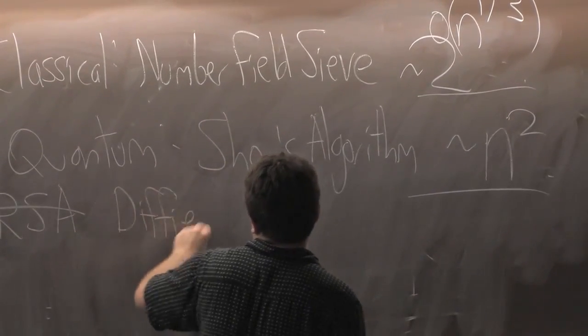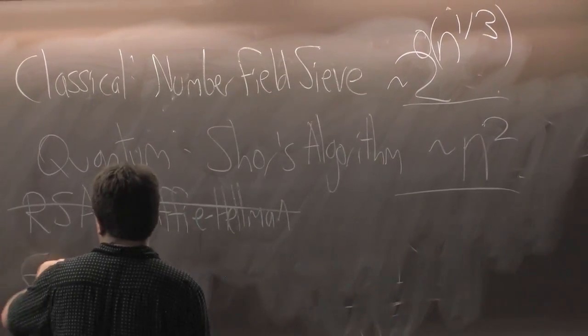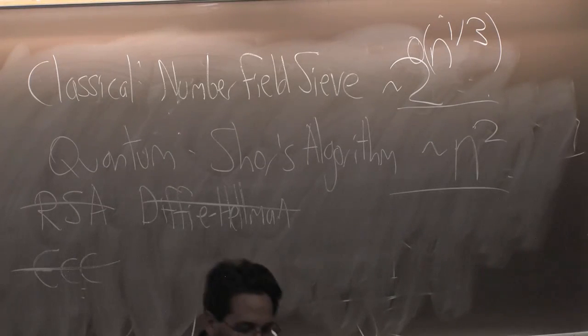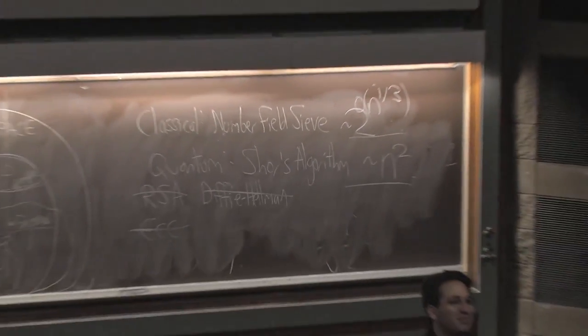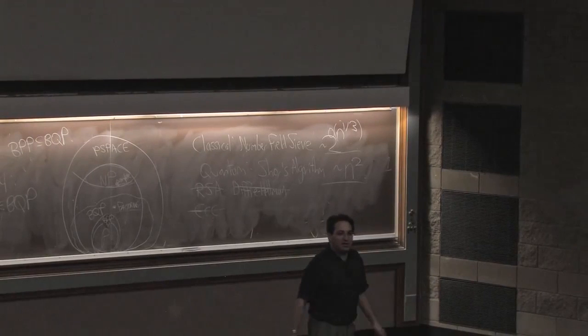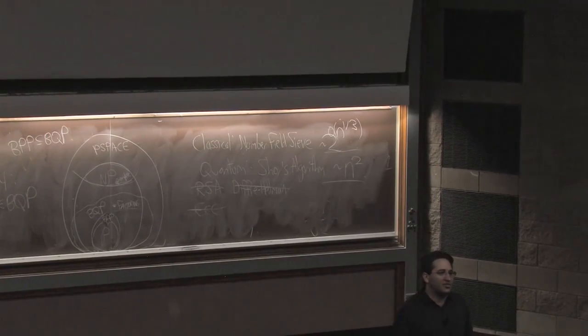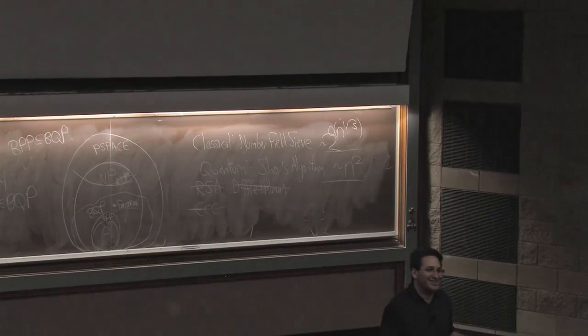By using related quantum algorithms, you could also break Diffie-Hellman. Elliptic curve cryptography would also be broken. Basically any cryptography that's based on abelian groups would be broken, is the rule. Shor's algorithm lets you sort of find out anything you might want to know about an abelian group in polynomial time. However,